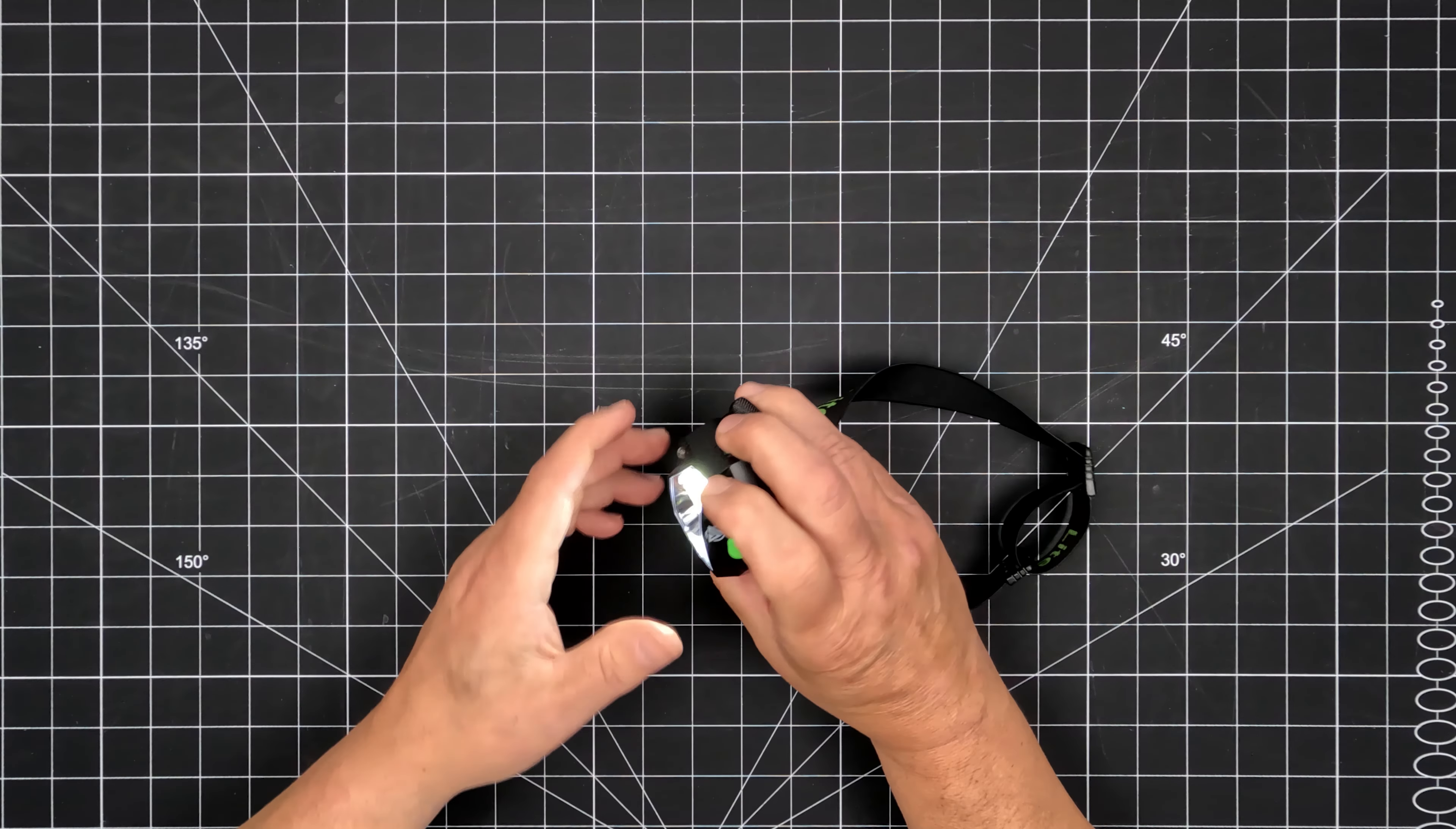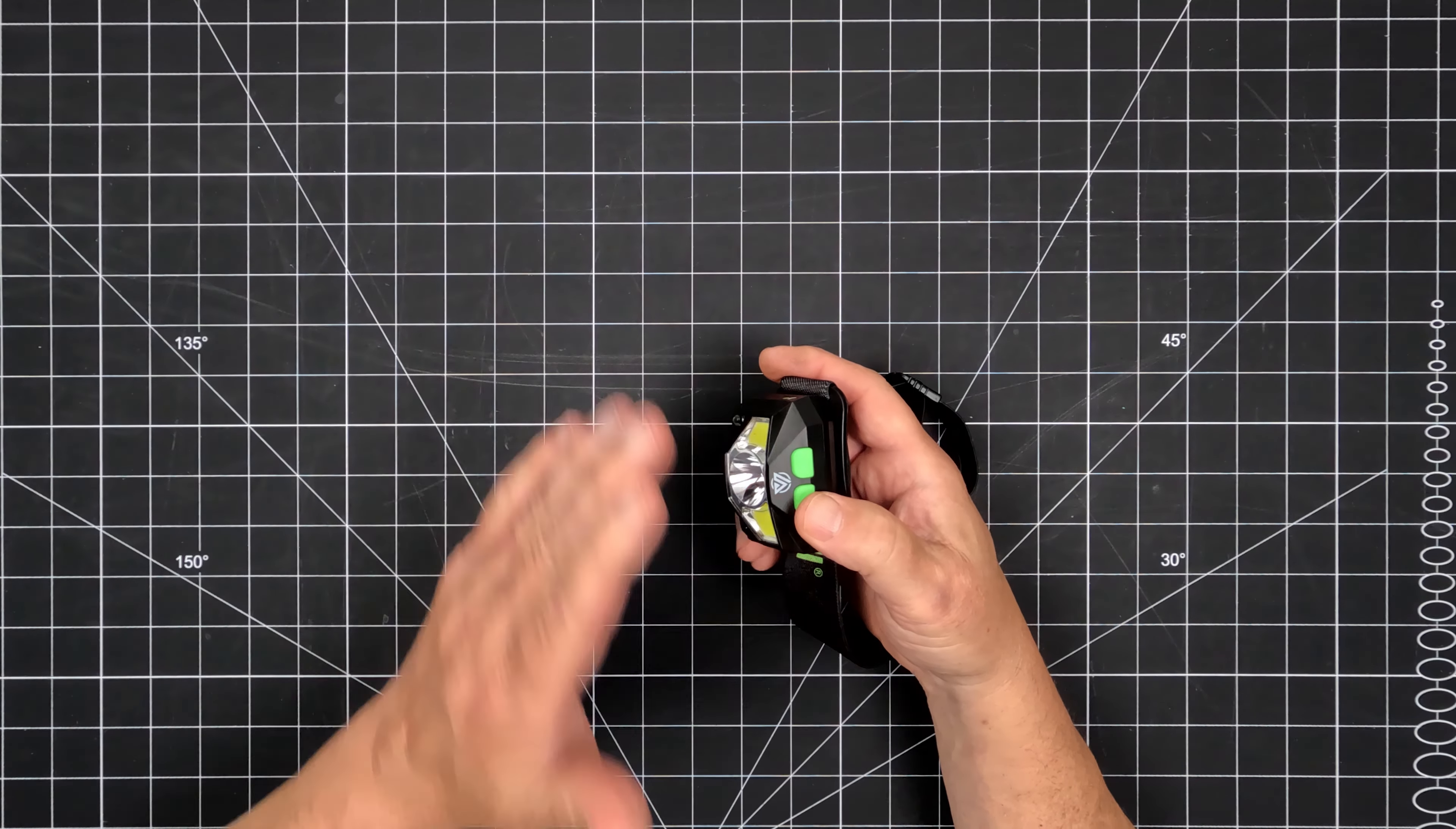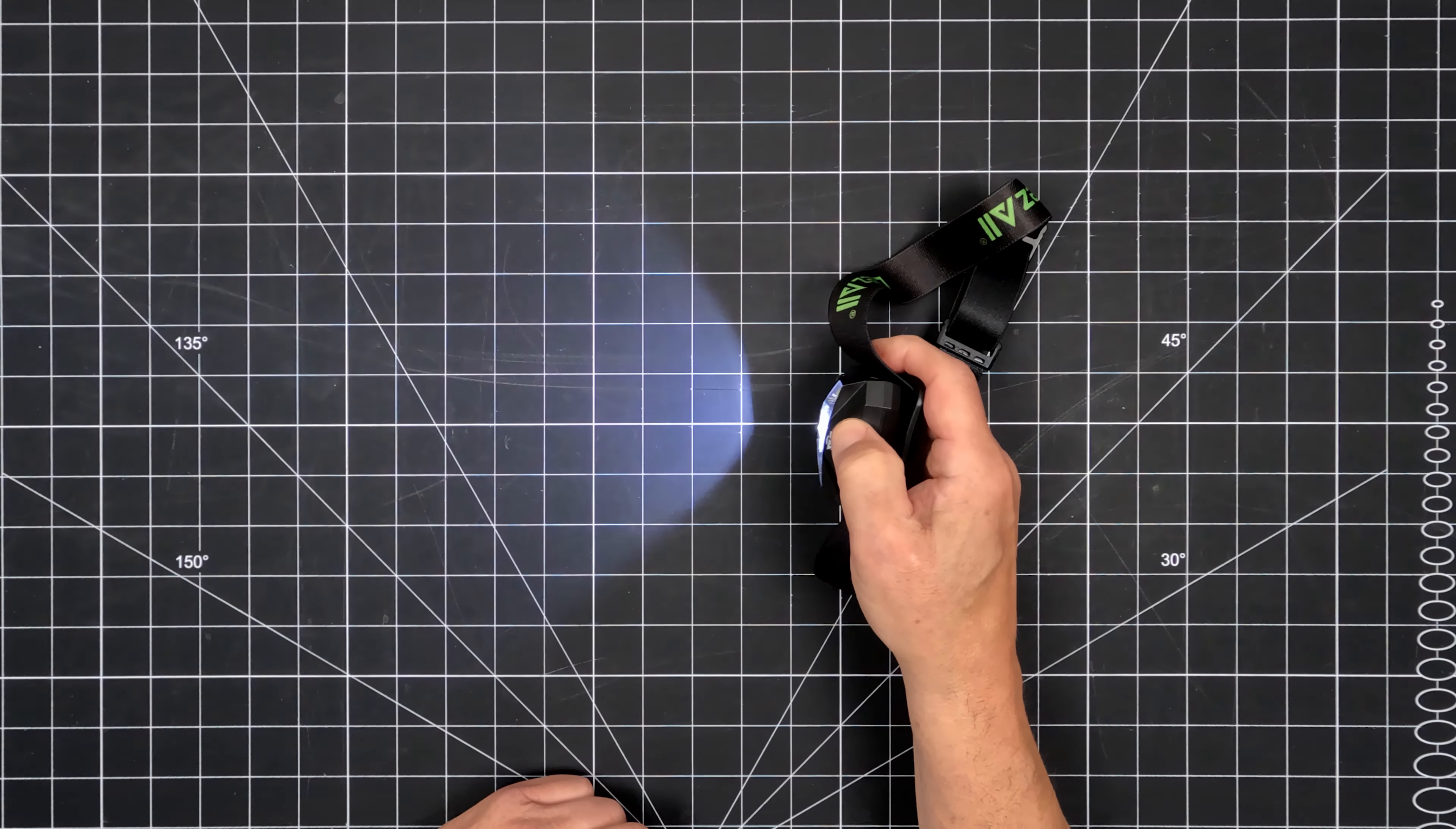A green light on the side of the headlamp indicates motion activation is active. The headlamp stays in the selected light mode until you either long press the motion activation button to turn it off or press the manual button. Repeatedly pressing the manual button cycles between all light modes plus off.